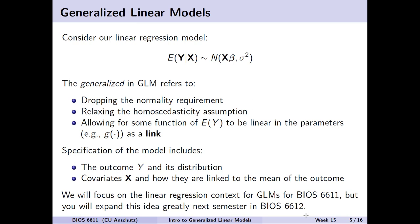Let's walk through some definitions and terminology. Consider our linear regression model in matrix notation. We have the expectation of our outcome given our covariates x — a matrix of potentially multiple covariates. In our linear regression model, we've assumed that y is normally distributed, that the mean equals our covariates times our beta coefficients, and that there is equal variance across all combinations of covariates with respect to the outcome.